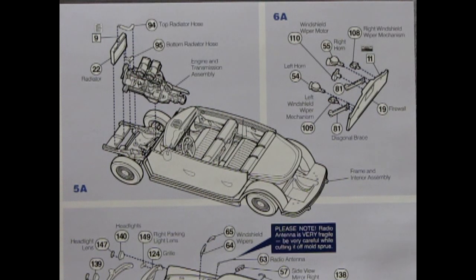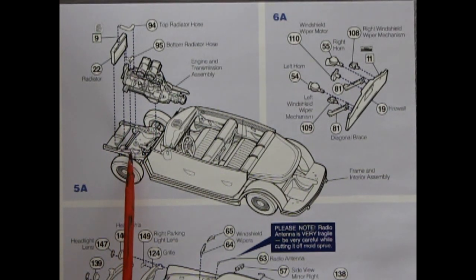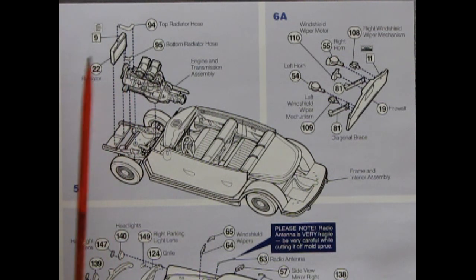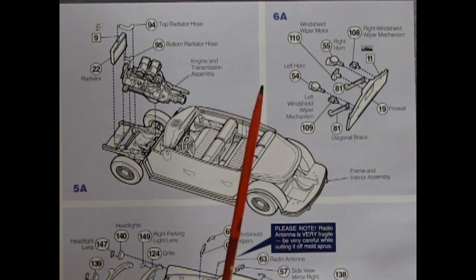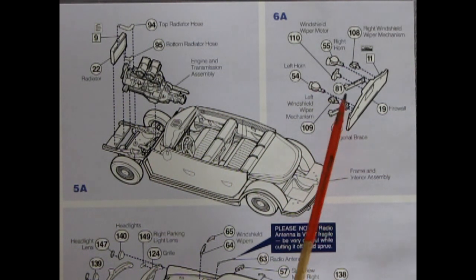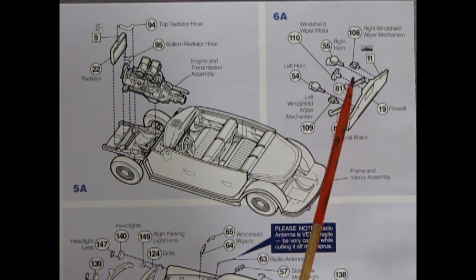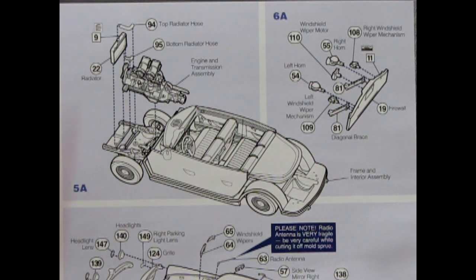Now panel six shows our engine dropping into the engine bay and getting hooked up to the radiator with our upper and lower radiator hoses and there are some cool decals which go in there as well. And then we've got our firewall and we've got these braces and our horns and our windshield wiper motors and wiper mechanisms.